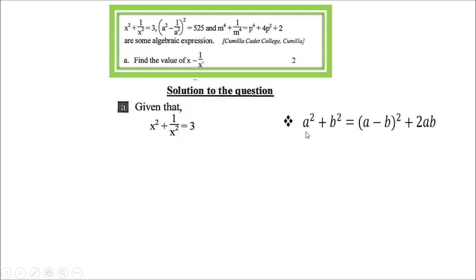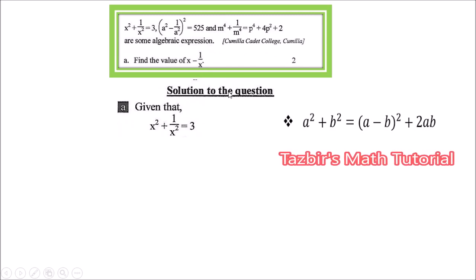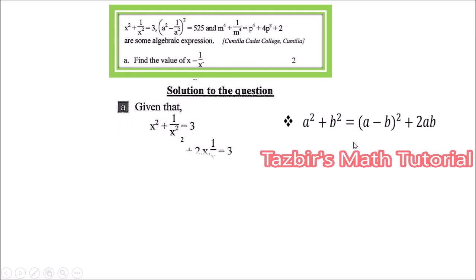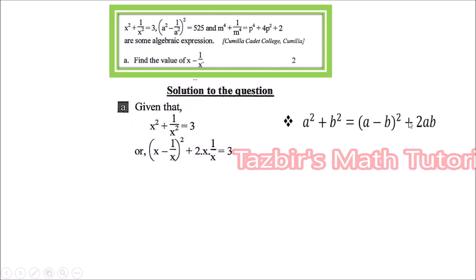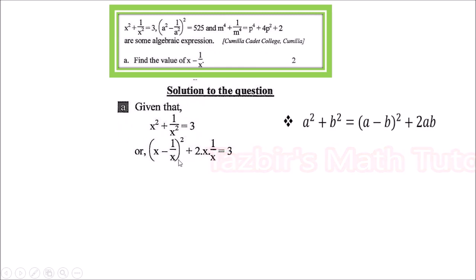We use the corollary: a² + b² = (a - b)² + 2ab. Why this one? Because we need to find x - 1/x, so we let a = x and b = 1/x. Writing the corollary accordingly: (x - 1/x)² + 2 × x × (1/x) = x² + 1/x².